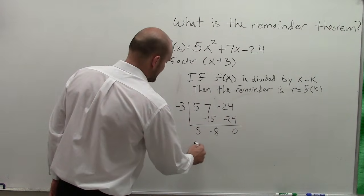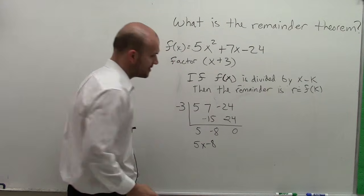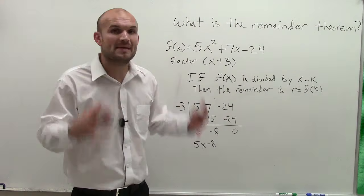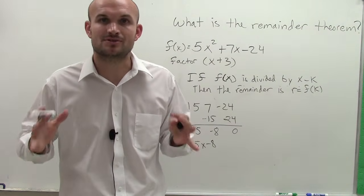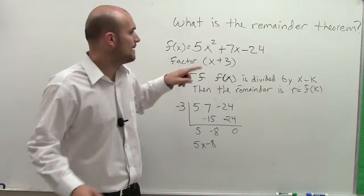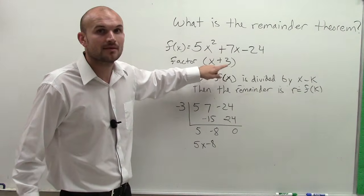All right, so my resulting factor would be 5x minus 8. But you notice the remainder is 0 right here. What the remainder theorem tells us, which is so cool, is I can also determine that this is a factor of this by evaluating the zero.